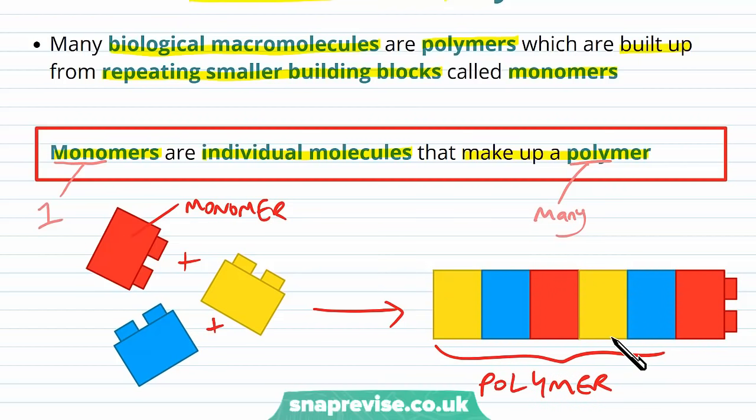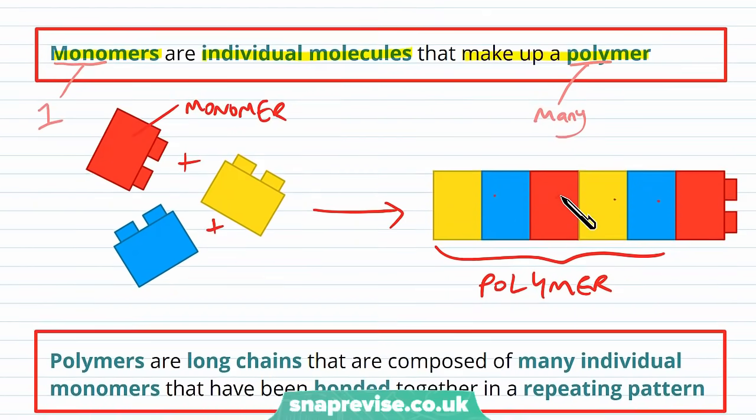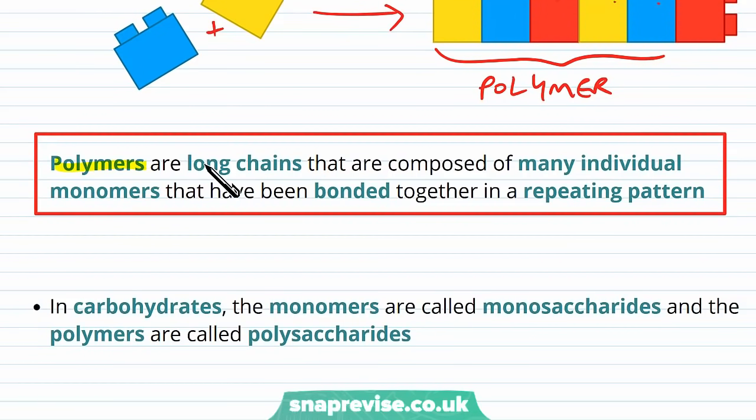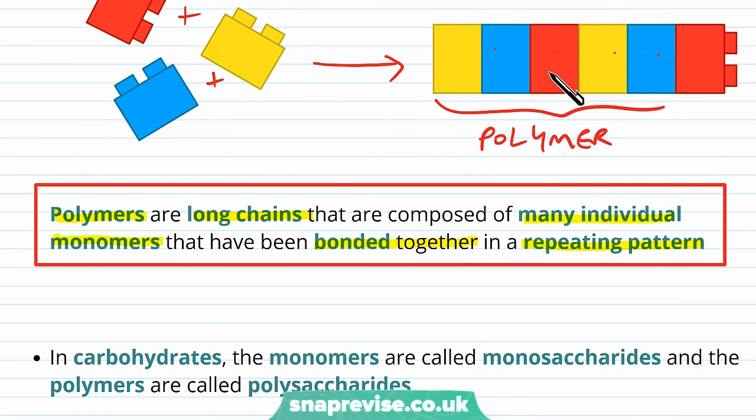And this is how most biological molecules exist. And it's this concept of building up larger chains of molecules which help us understand how plants can get so tall. How are their stems so long? How are our bones so long? They're not made of individual units. They're made of lots and lots of units joined up into massive structures. That allow us to be as big as we are. So by definition, a polymer is a long chain composed of many individual monomers which have been bonded together in a repeating pattern.